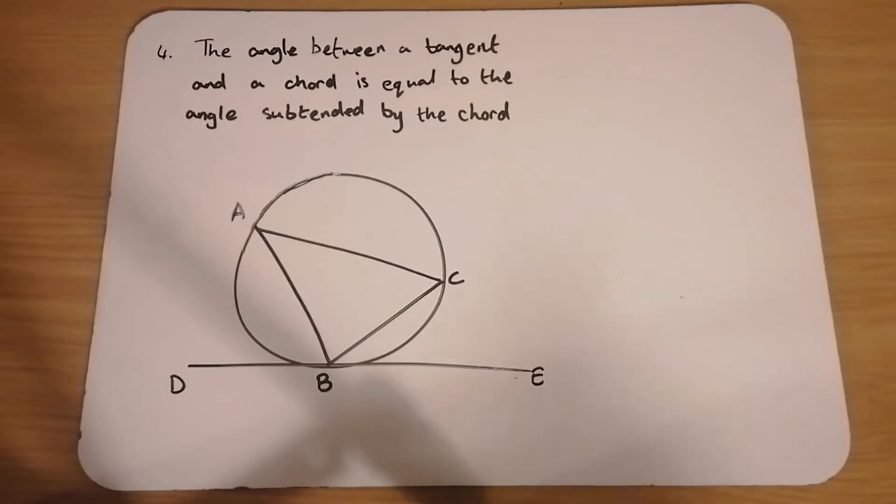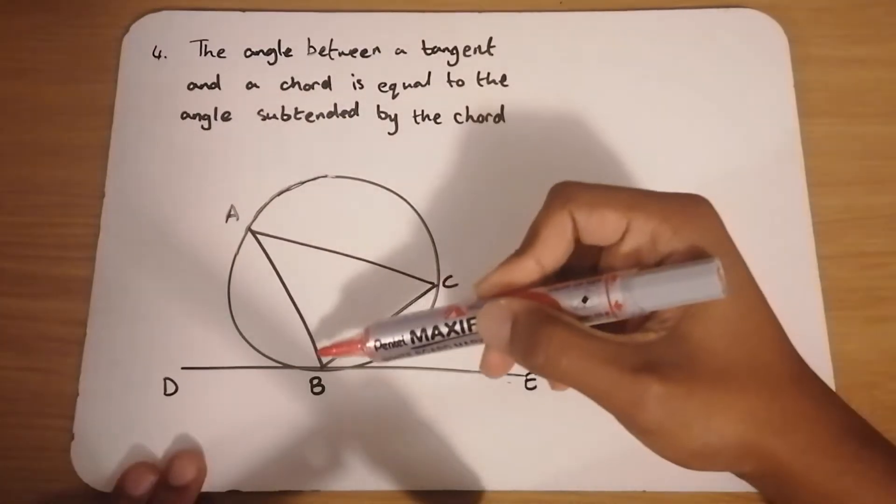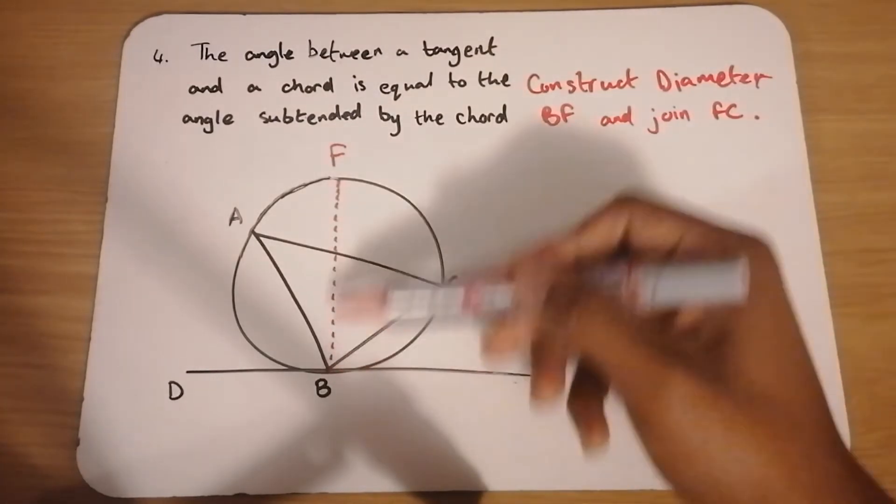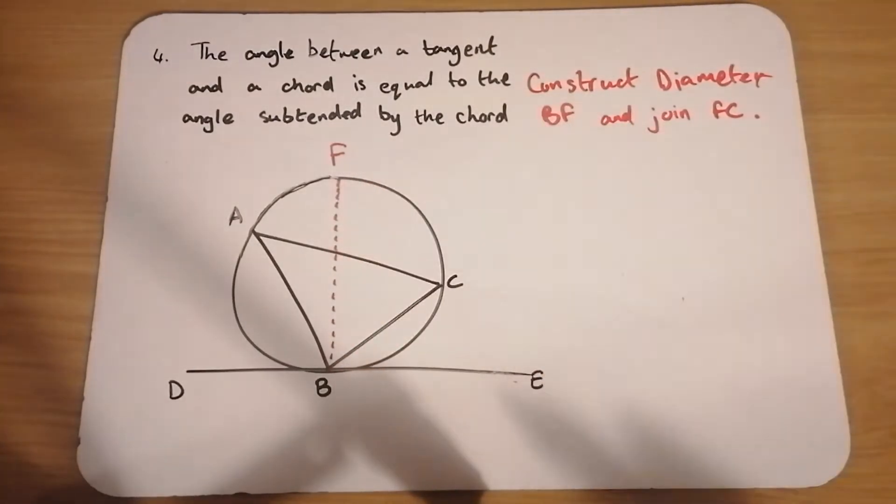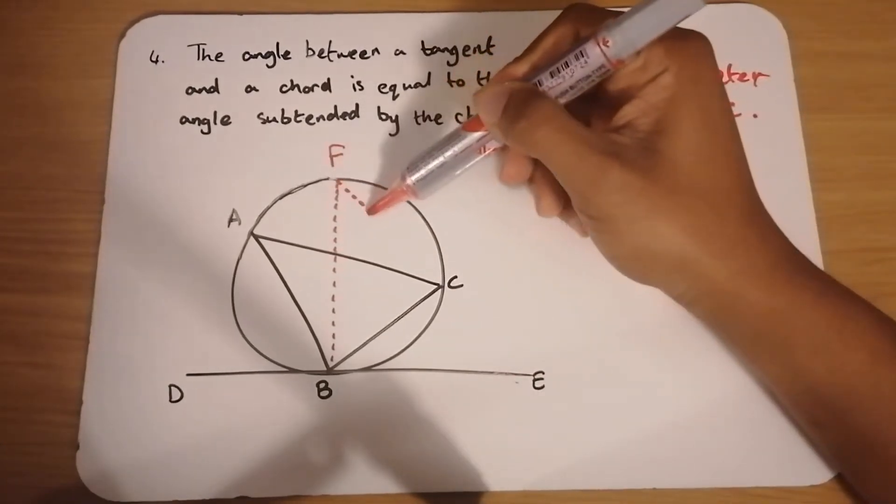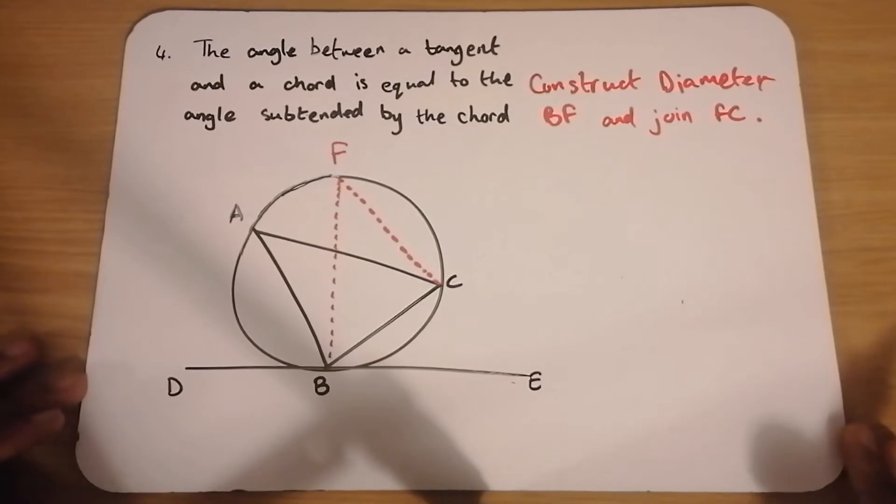Now to do that, we're going to have to start with our constructions as always. So we'll construct the diameter BF. Important that you say diameter. This line BF must be a diameter. Then you want to join this line FC. Okay, so we have a chord there, FC.